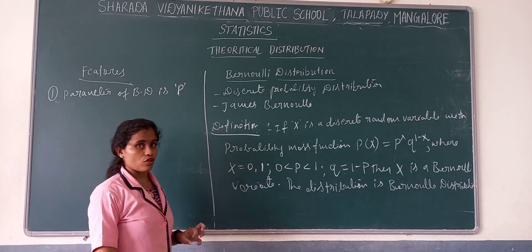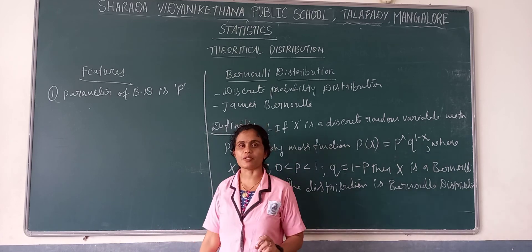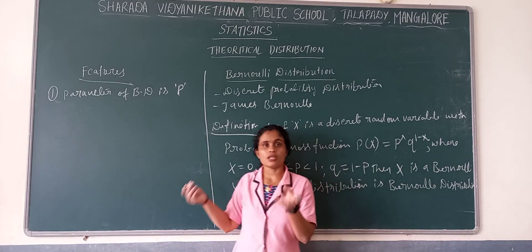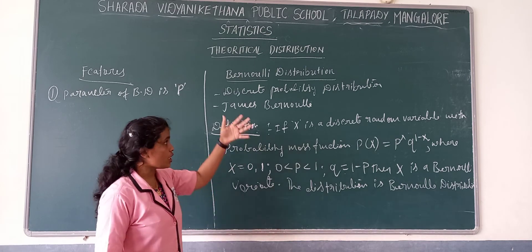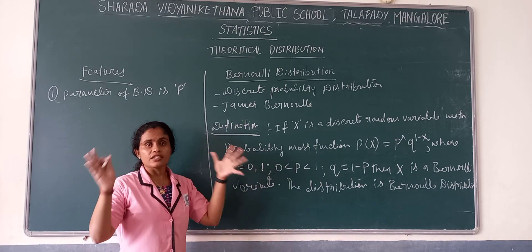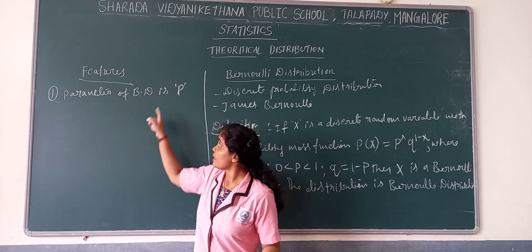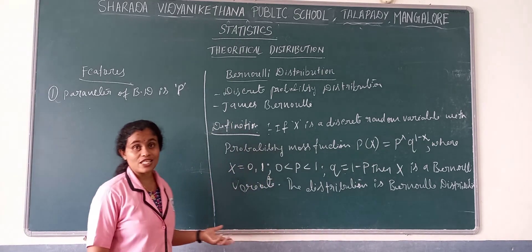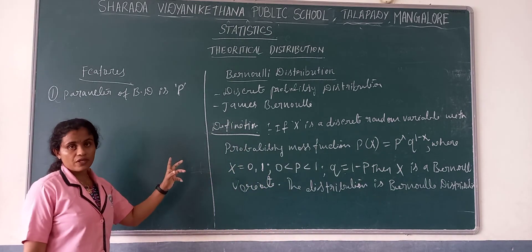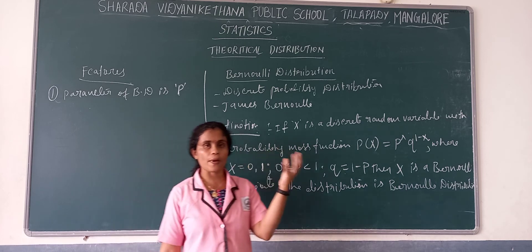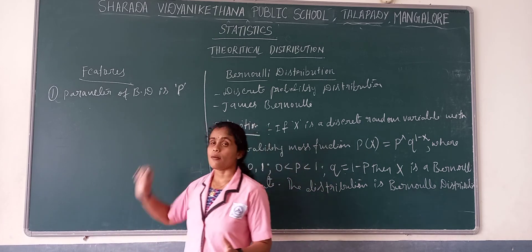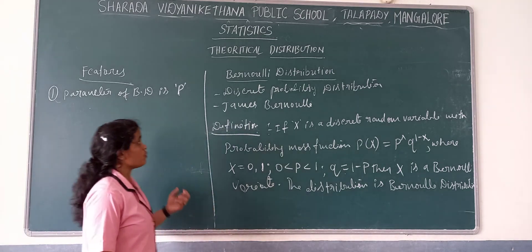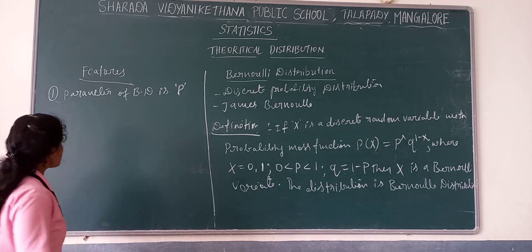P is the parameter of Bernoulli distribution. A parameter is the term which defines the particular distribution or particular thing about what we are speaking — that we call it a parameter. It is very important that you know what are the parameters of different distributions. The parameter of Bernoulli distribution is P. That is the first feature.